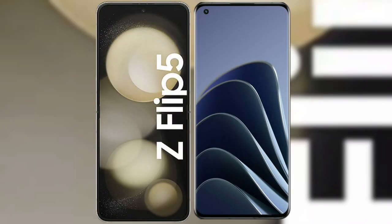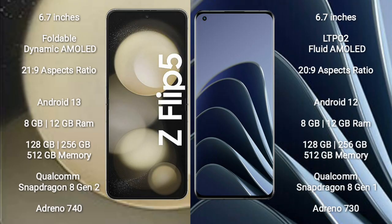I will compare the new Samsung Galaxy Z Flip 5 with the OnePlus 10 Pro. Samsung Galaxy Z Flip 5 comes with a 6.7-inch foldable Dynamic AMOLED display with an aspect ratio of 21:9. OnePlus 10 Pro comes with a 6.7-inch LTPO2 Fluid AMOLED display with an aspect ratio of 20:9.